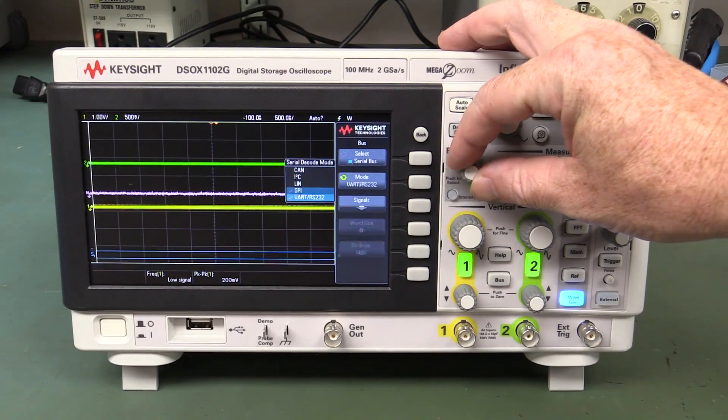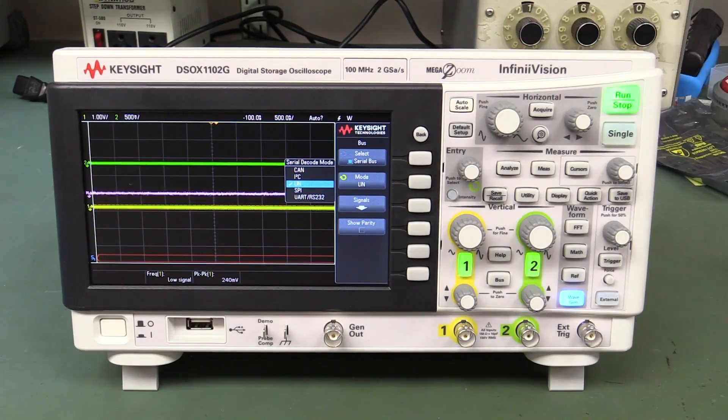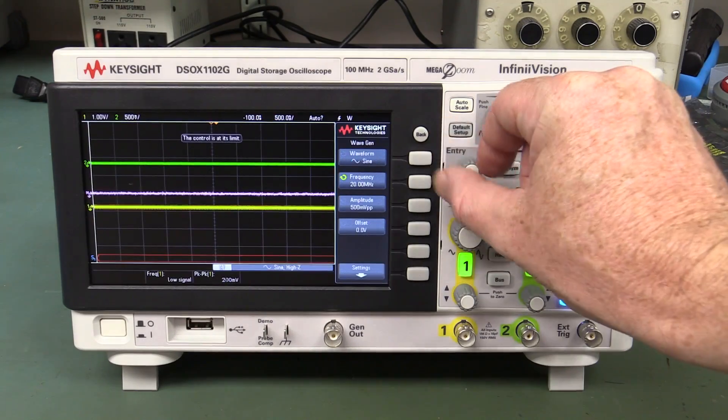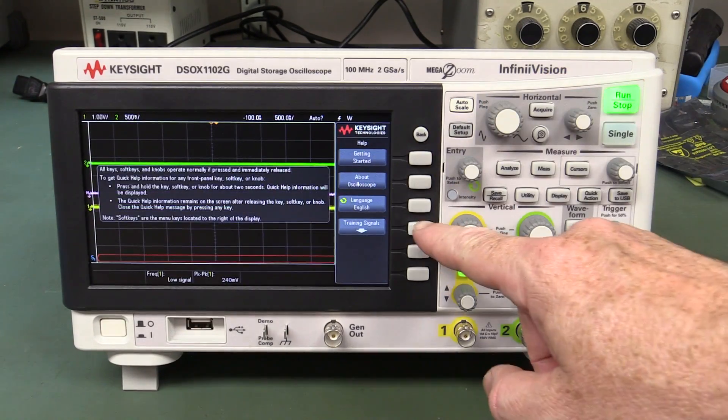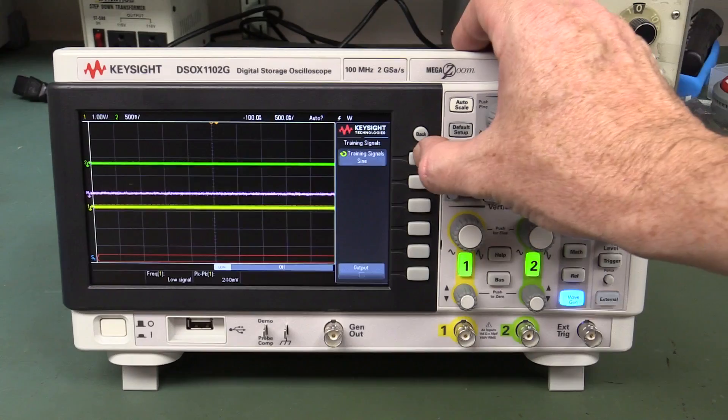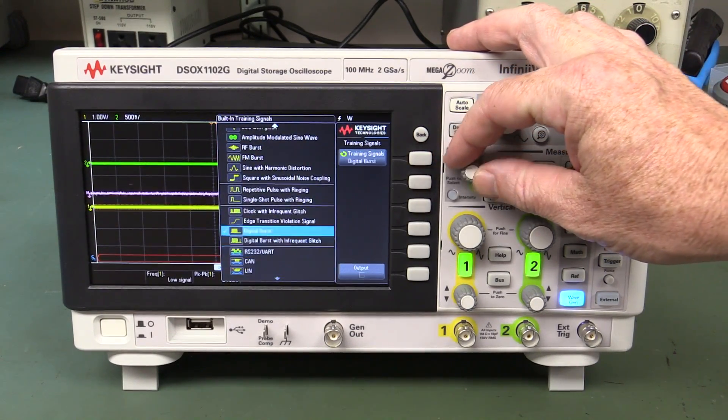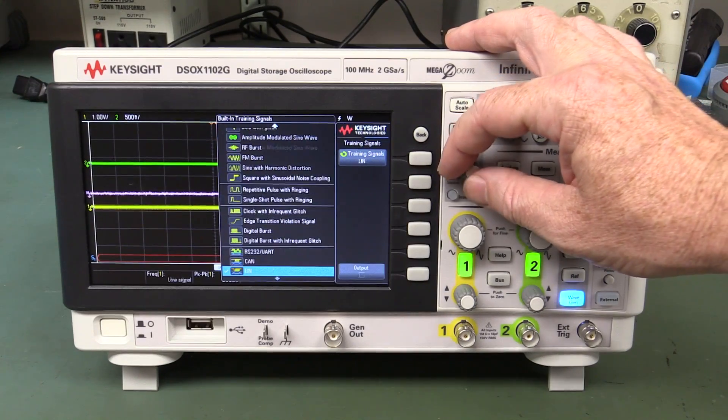Yep, serial buses. Nice. That'll be hardware decoding too. Telling you what, I like the look of this save to USB button beauty. Just hit that, Bob's your uncle. 20 meg function gen. Oh yeah. Training signals. Now we're talking. Just like on the bigger X-Series. Fantastic.